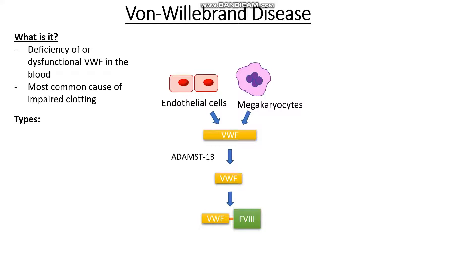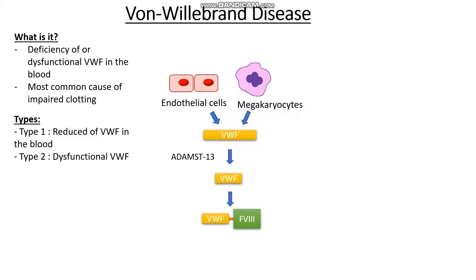There are several types of von Willebrand's disease. Type 1 is where we simply have reduced levels of von Willebrand factor in our blood. Type 2 is where we have normal levels of von Willebrand factor but they are dysfunctional — type 2 can be divided into quite a few subtypes, but in all of them the von Willebrand factor is not behaving the way it's supposed to. And lastly, type 3 is a complete or near-complete lack of von Willebrand factor, which can be quite severe and life-threatening.